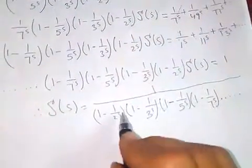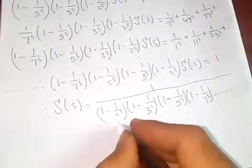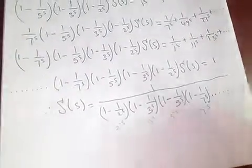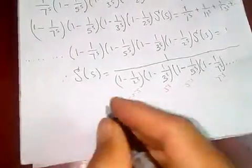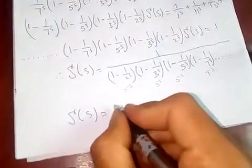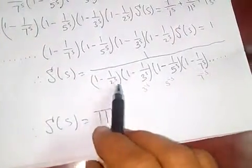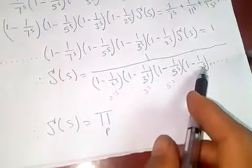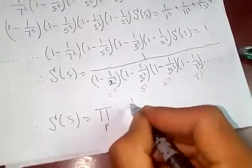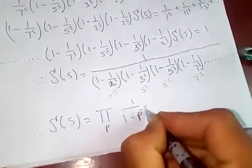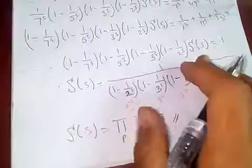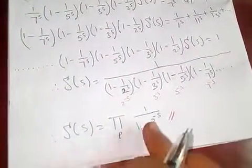Now if I bring out the denominator, it will be 2 to the minus s, 3 to the minus s, 5 to the minus s, 7 to the minus s, and so on. So zeta of s equals the product over this — which is what we call the product over prime numbers. If you see here: 2, 3, 5, 7 are all prime numbers. So I can write this as the product of 1 over 1 minus p to the negative s, where p means prime number. This is our required answer — the relation between the Riemann zeta function and prime numbers.